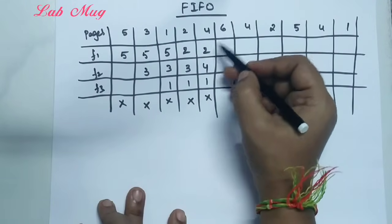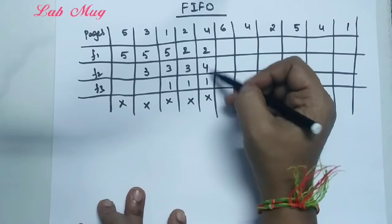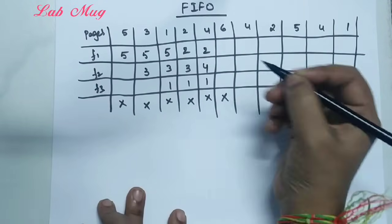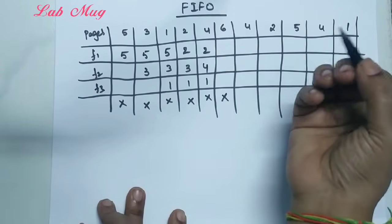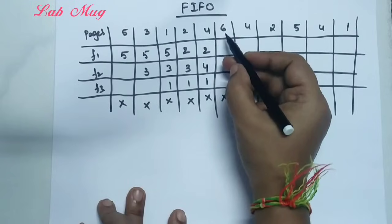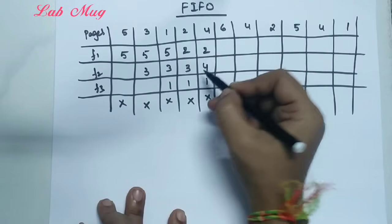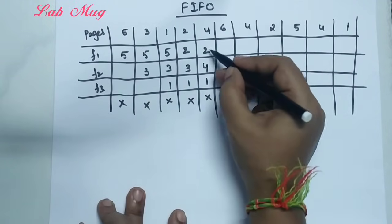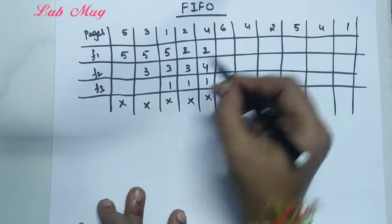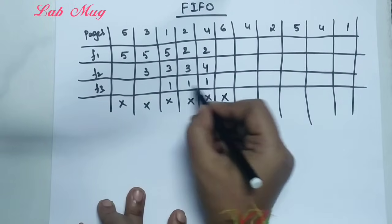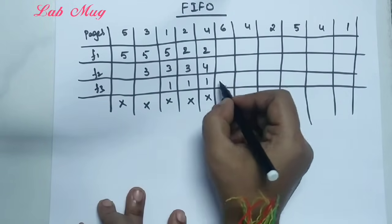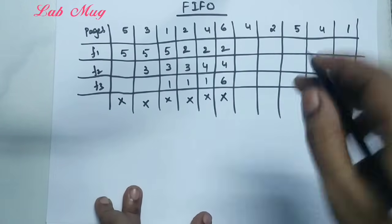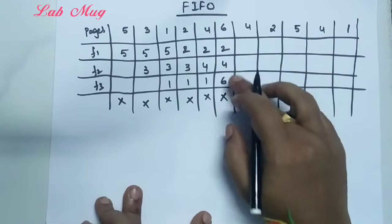So now we have 4, 1, and 2 in memory. Next is page 6, which is not in main memory — page fault again. Among 2, 4, and 1, page 1 was the earliest inserted comparatively, so 1 is replaced with 6. Now we have 4, 2, and 6.